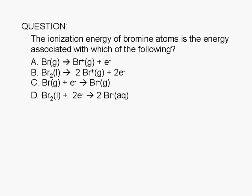The ionization energy of bromine is the energy associated with which of the following? A: Atomic bromine in the gas phase yields bromine positive one ion in the gas phase plus an electron.